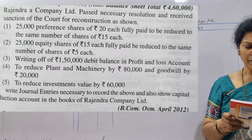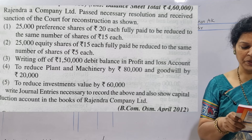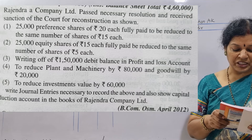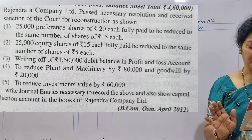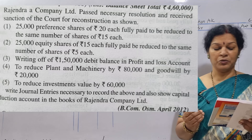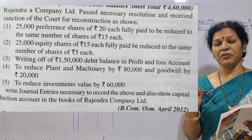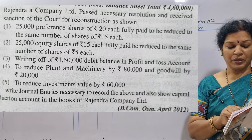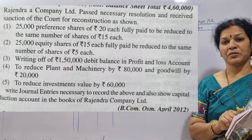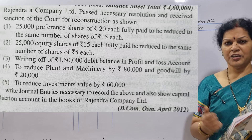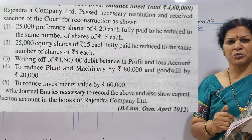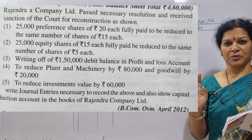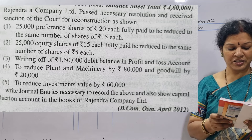Second one: 25,000 equity shares of ₹15 each, fully paid, to be reduced to the same number of shares at ₹5 each. The actual value is 25,000 shares at ₹15. They wanted to decrease it to ₹5 — 25,000 into ₹5. Entry will be same like the previous one: equity shares account debit, to equity shares account, to capital reduction account. Second entry.